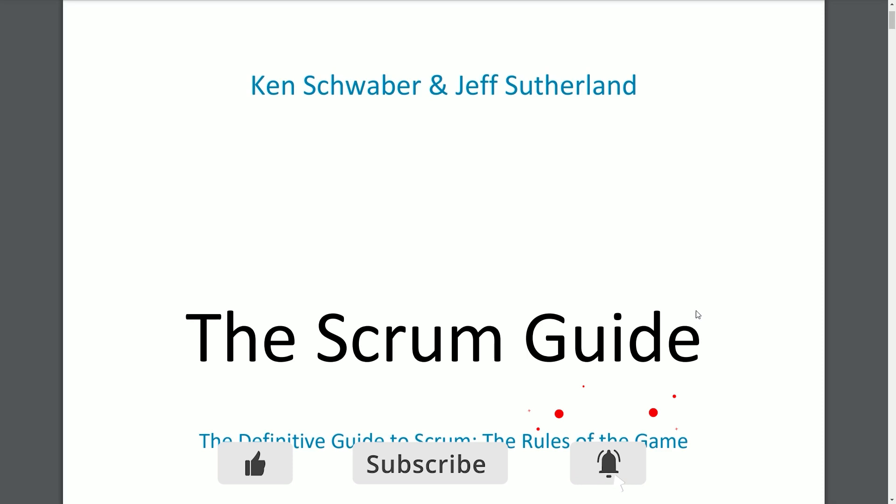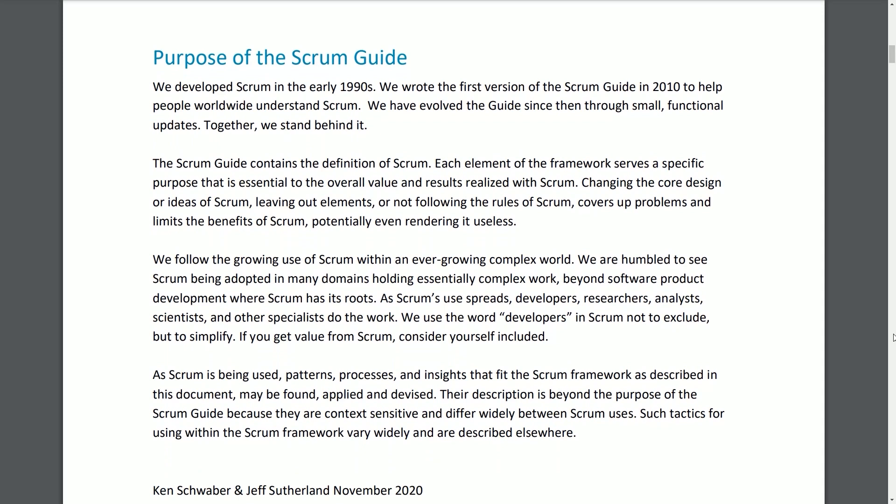Ken Schwaber and Jeff Sutherland — The Scrum Guide: The Definitive Guide to Scrum: The Rules of the Game, released November 2020. Purpose of the Scrum Guide: We developed Scrum in the early 1990s and wrote the first version of the Scrum Guide in 2010 to help people worldwide understand Scrum. We have evolved the guide since then through small functional updates. Together we stand behind it. The Scrum Guide contains the definition of Scrum. Each element of the framework serves a specific purpose essential to overall value and results. Changing core design, leaving out elements, or not following the rules covers up problems and limits benefits, potentially rendering Scrum useless.